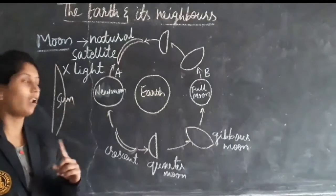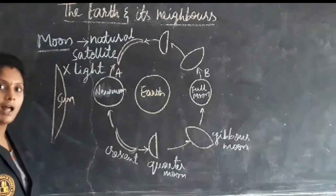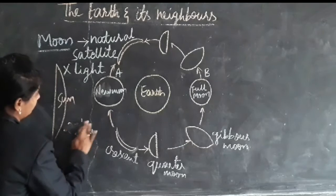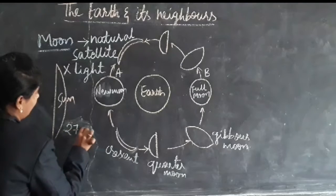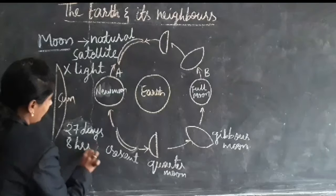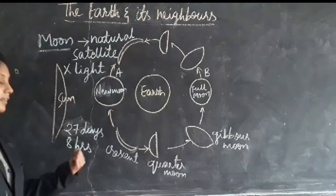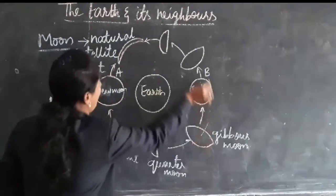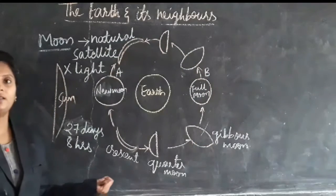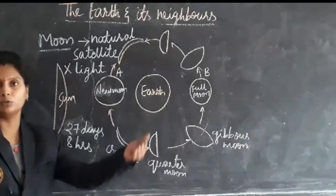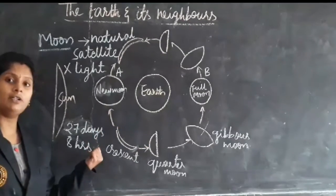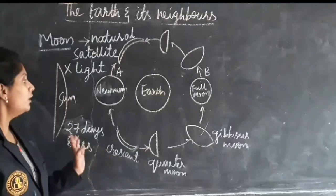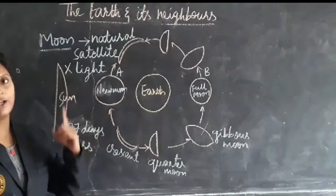Just as the earth is rotating itself, the moon also rotates itself. It takes 27 days and 8 hours to rotate itself, and the same time to revolve around the earth. That is why we call it a natural satellite of earth — it moves around the earth in 27 days and 8 hours.